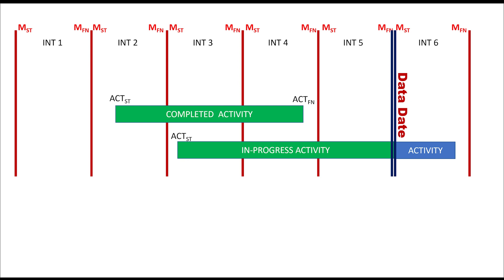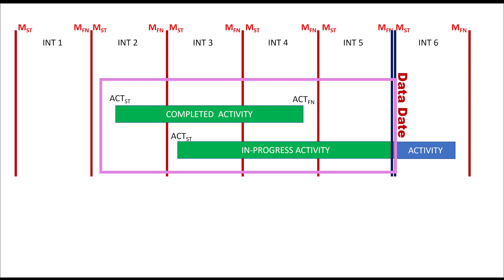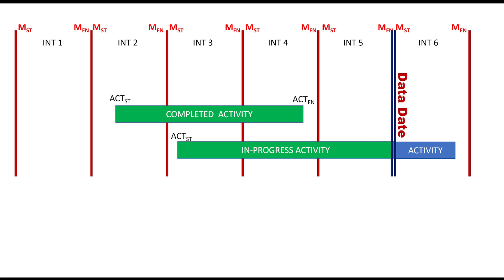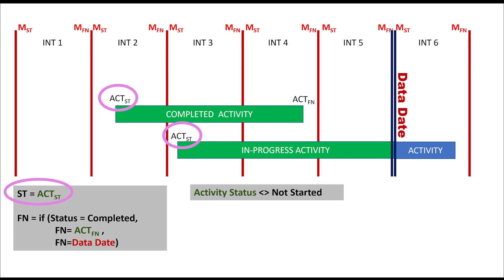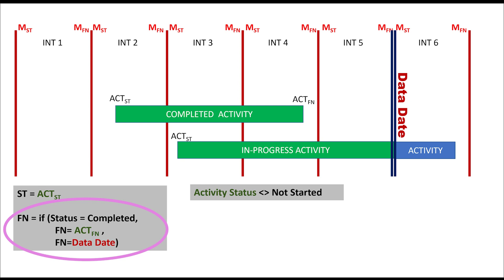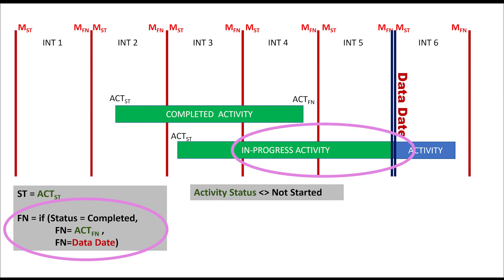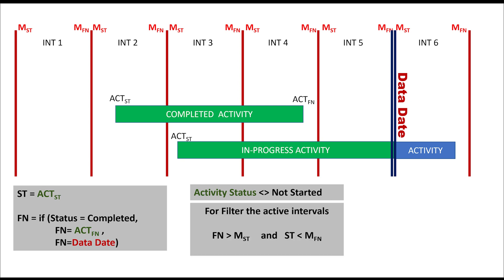Now I'll explain how to distribute earned value cost. We will distribute earned value cost for the part of the schedule before the data date, which means activities with status completed or in progress only. So first, we filter activities where activity status does not equal not started. For defining the dates: start (st) will be the actual start for any selected activity. For finish (fn), there are two cases: for activities with status completed, fn will be actual finish; for activities with status in progress, fn will equal the data date.